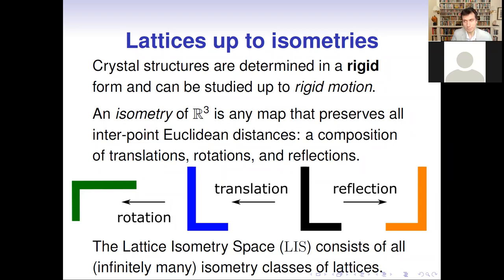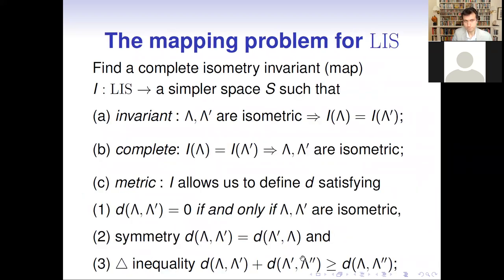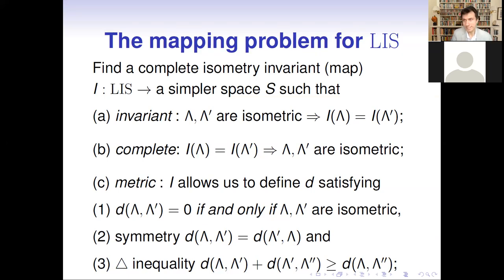This is a continuous space, which is why it's hard to imagine and classify. Our aim is to understand this space. More formally, the problem I would like to solve is to find a complete isometry invariant — a map from this lattice isometry space to a simpler space. That simpler space will be the space of root invariants of lattices, presented a bit later. Invariance means the invariant takes the same value on isometric lattices; completeness means it takes the same value only on isometric lattices. We also want a metric on lattices defined in terms of these invariants, satisfying the standard metric axioms — most importantly that distance d is zero if and only if two lattices are isometric.